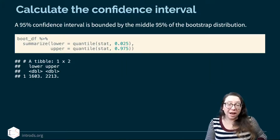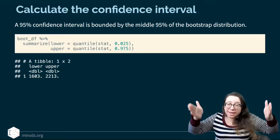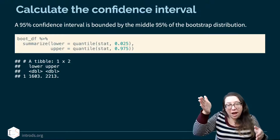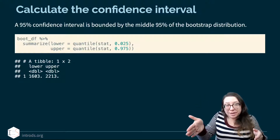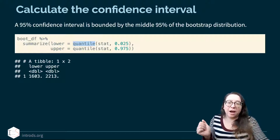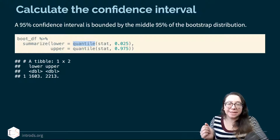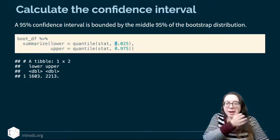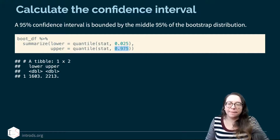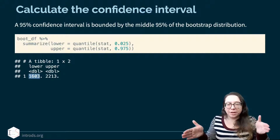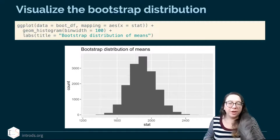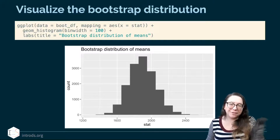To calculate the confidence interval, I take the middle 95% — that means chopping off 2.5% from the bottom end and 2.5% from the upper end. I calculate the quantiles of my distribution of statistics: one at the 2.5% mark and the other at the 97.5% mark. The numbers come out to 1,603 and 2,213 — those are the vertical lines chopping off the top and bottom 2.5% of this distribution.